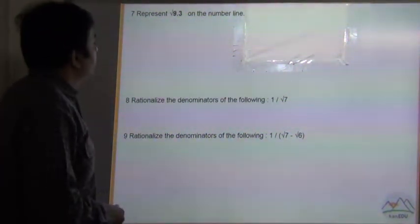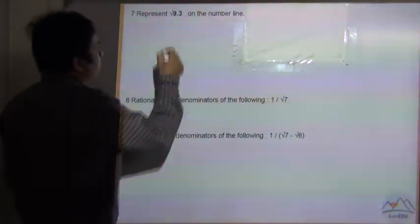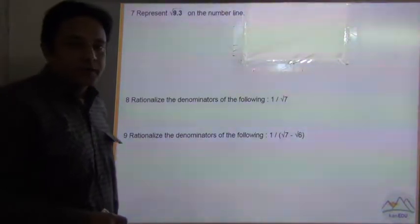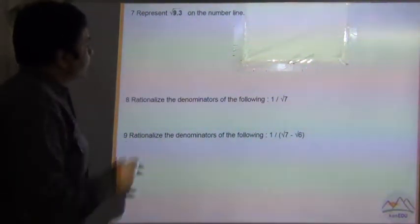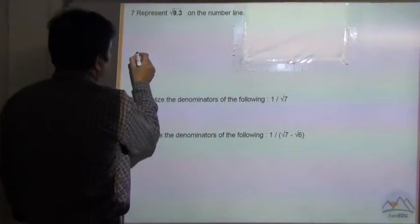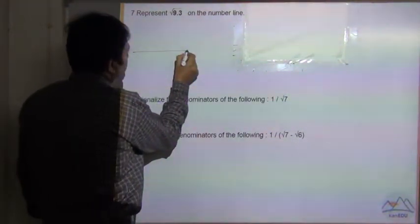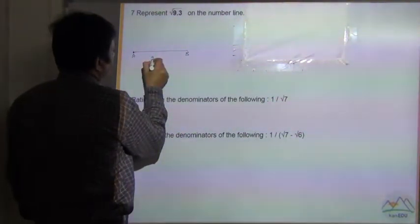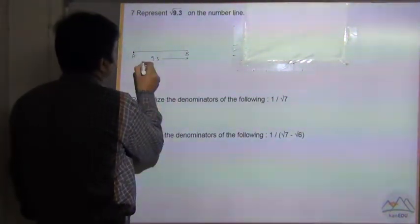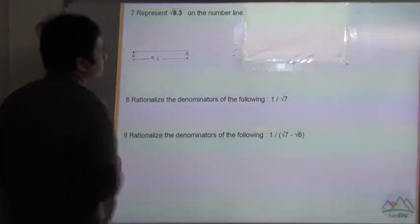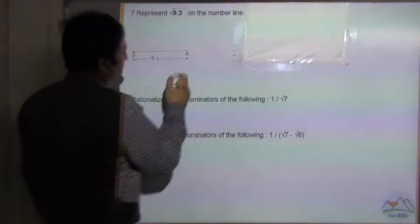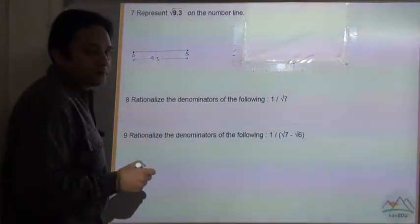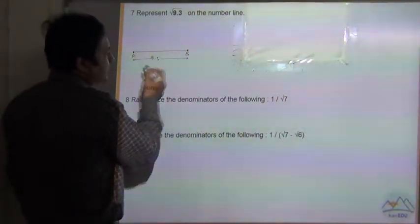Question number 7: represent under root 9.3 on the number line. So how to do it? Let us draw a line AB equivalent to 9.3 units. Now add 1 unit. 9.3 can be any unit, so let us say it is a centimeter.